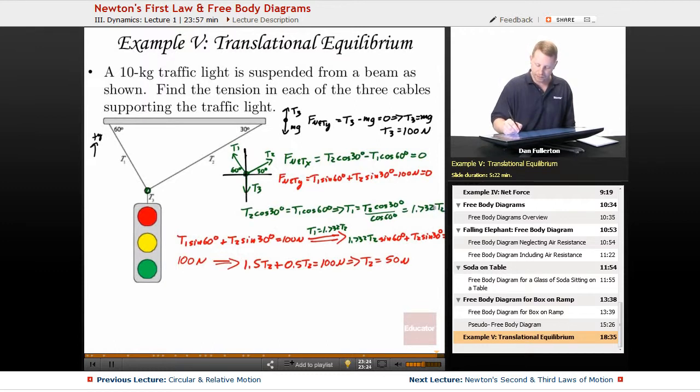And once I've done that, if I know T2 is 50 newtons, I can plug that back into here for T2 to find that T1 is 1.732 T2 which was 50 newtons, or 86.6 newtons.